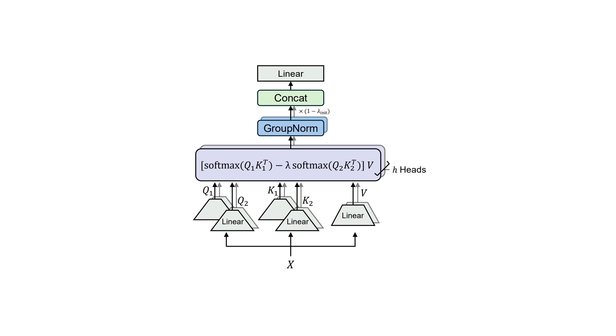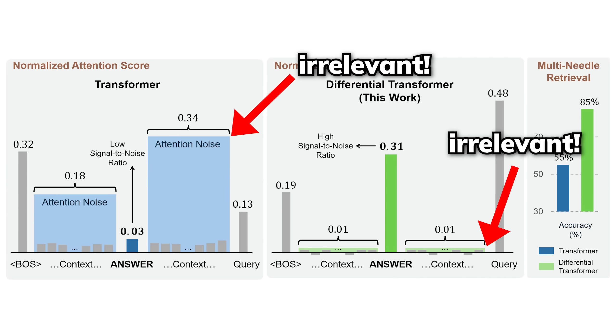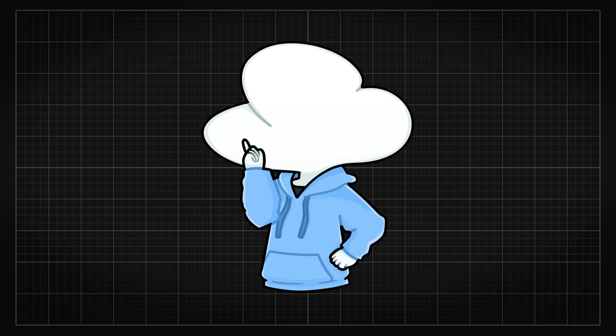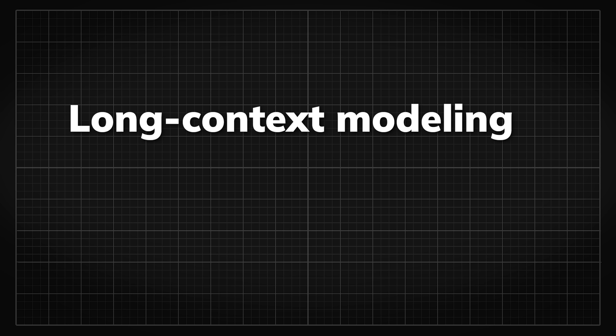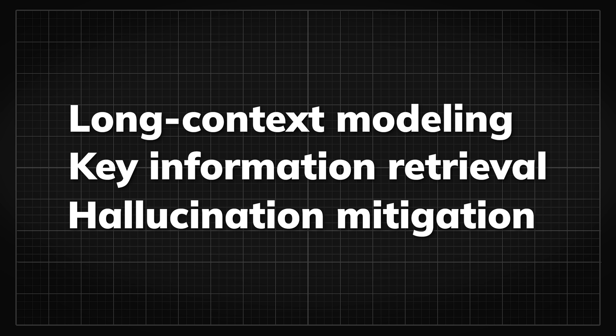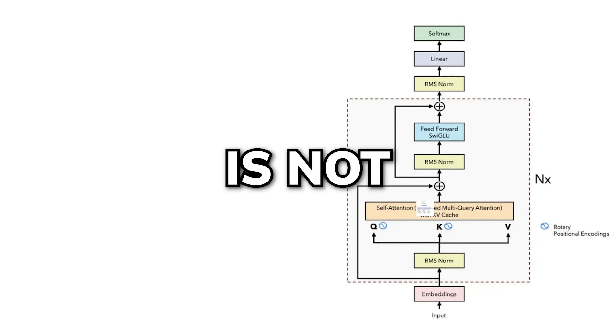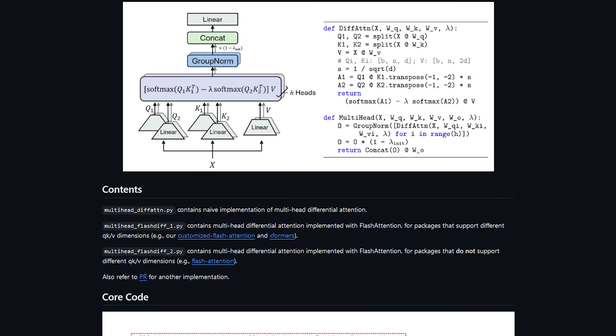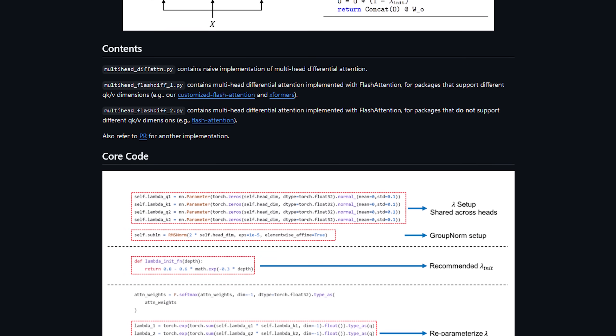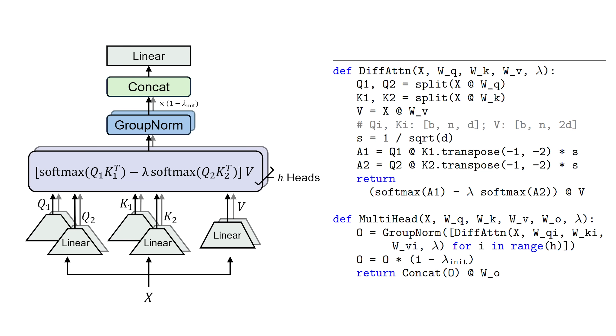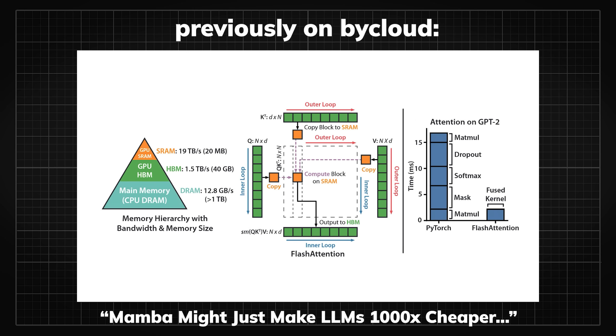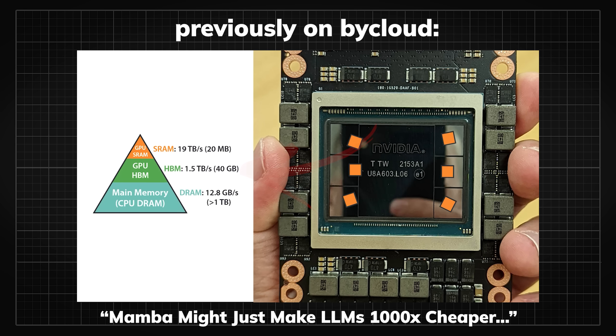So overall, this differential attention technique improves the model's ability to focus on relevant context, which is particularly useful in tasks like long context modeling, key information retrieval, and hallucination mitigation. Implementing this into the existing LLM system is not as complicated either. In the research, they have shown how to implement differential attention with flash attention, which essentially is just calculating an extra pair of QKV and subtracting them. By the way, flash attention is an efficiency algorithm that speeds up and reduces the computer's memory usage of the attention mechanism, so basically a hardware implementation.